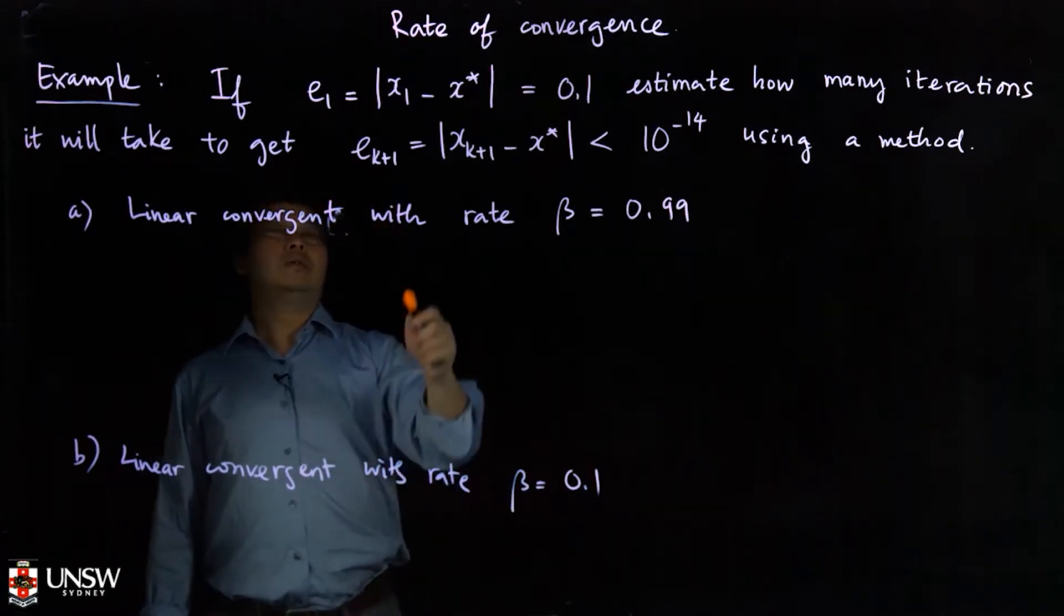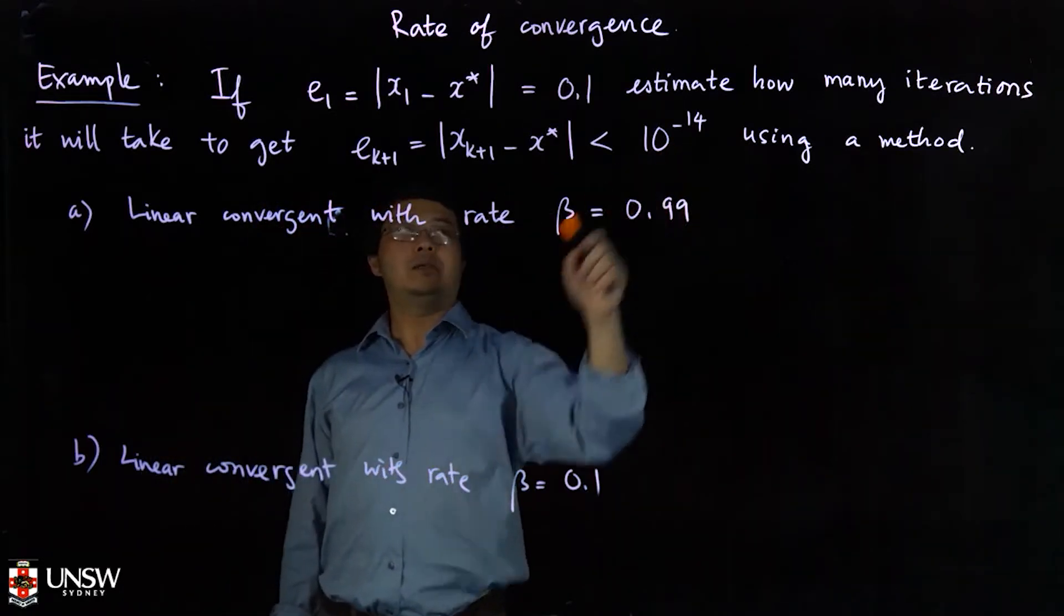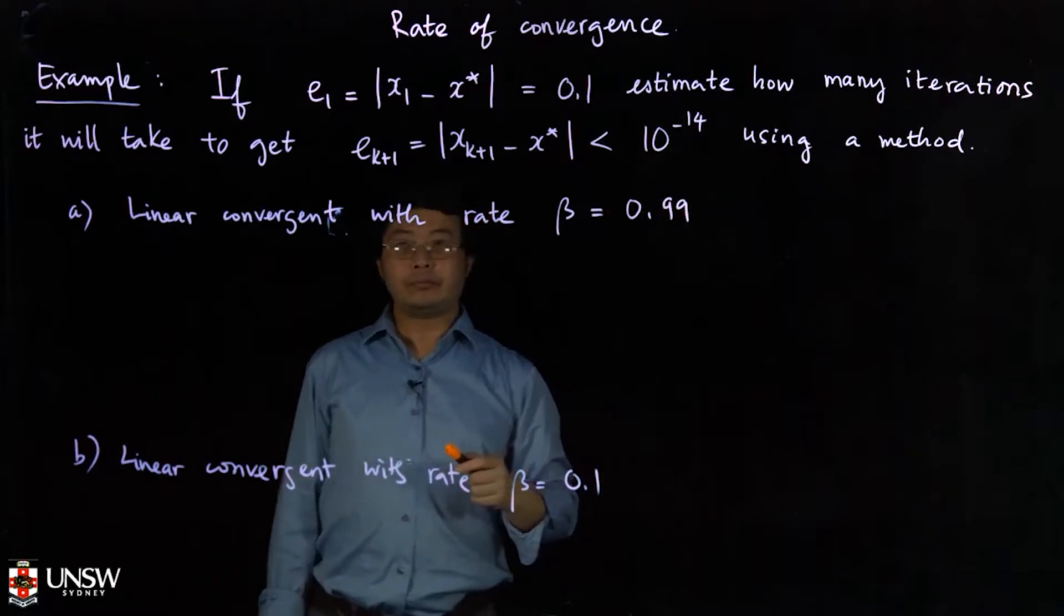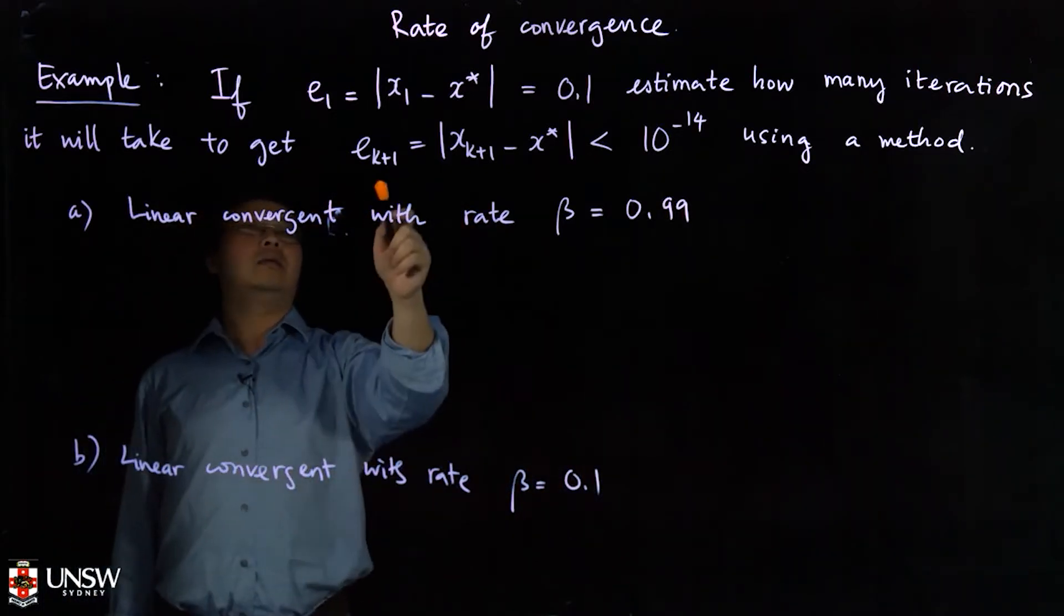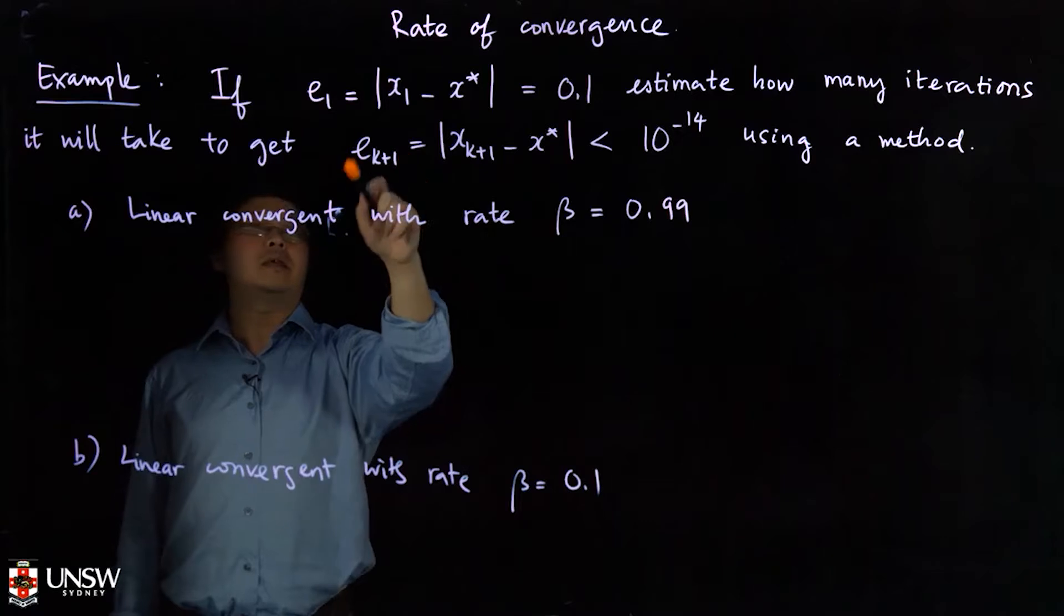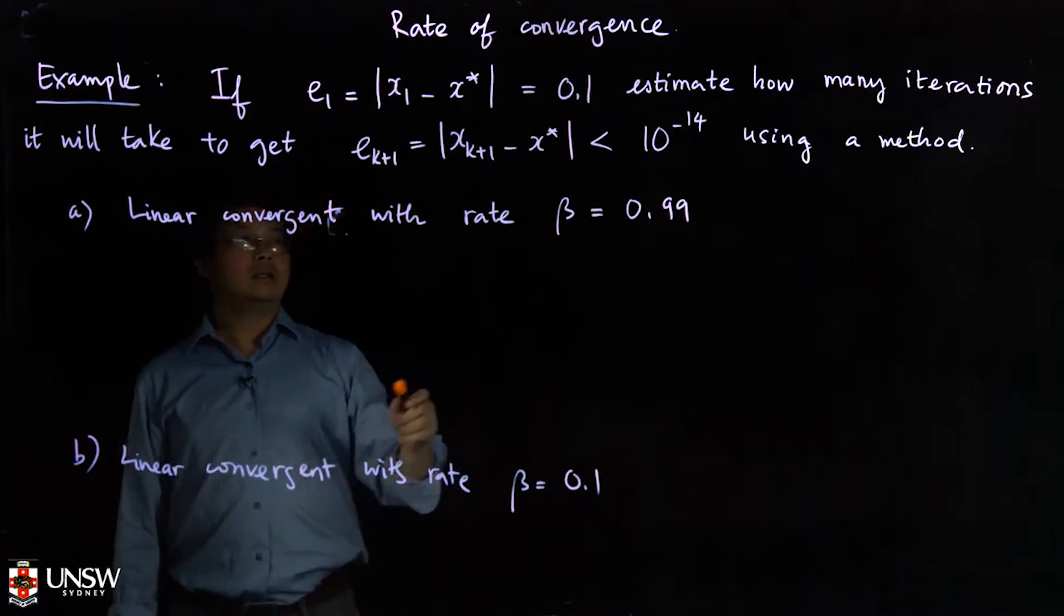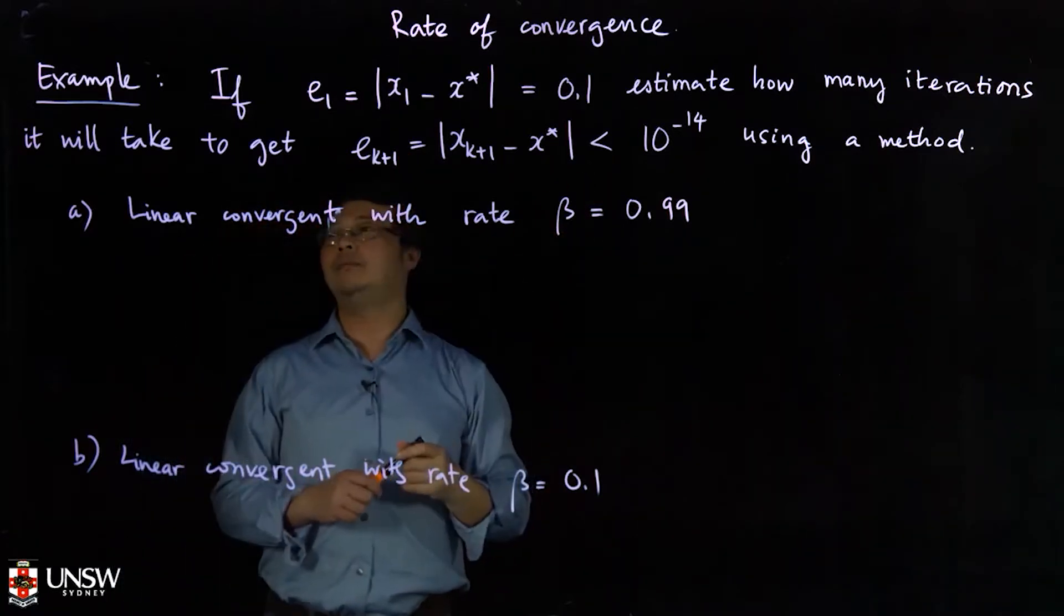Now we want to estimate how many iterations it will take to get to some error less than 10^{-14}. This means that we try to find K so that the error at step e_{k+1} is less than 10^{-14}.